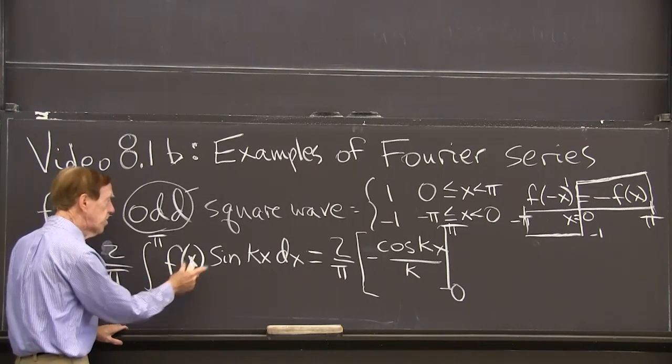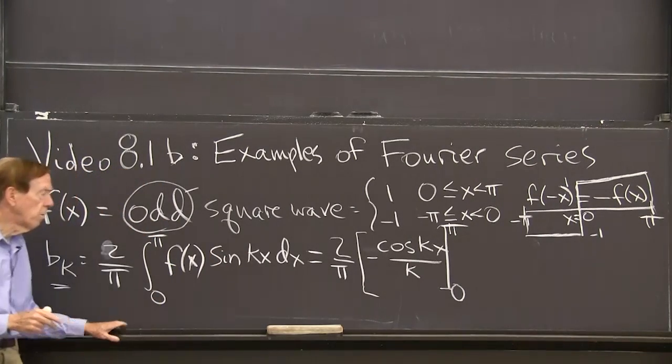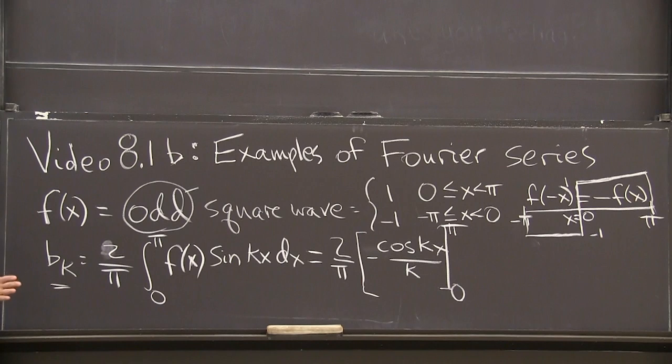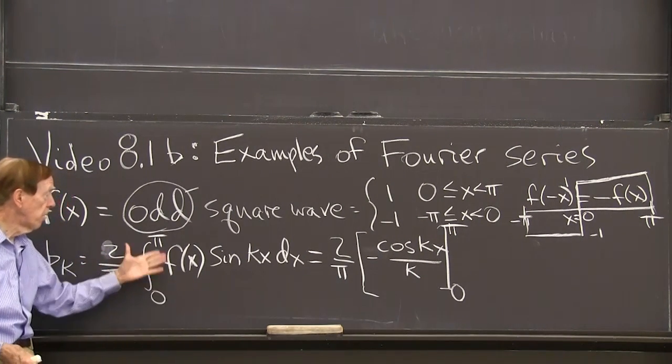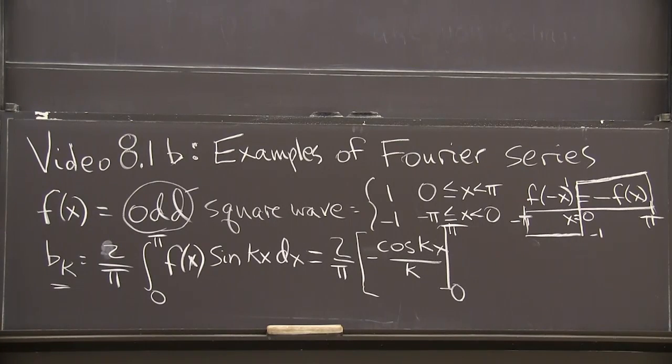So that's an odd function. That's an odd function. When I multiply them, I have an even function. And the integral from minus pi to 0 is just the same as the integral from 0 to pi. So I'll do only 0 to pi and multiply by 2.